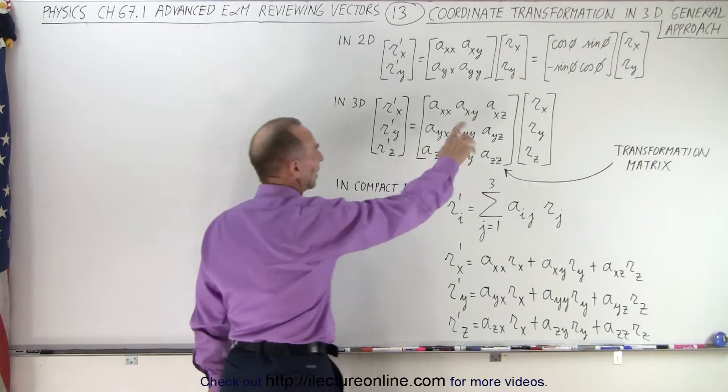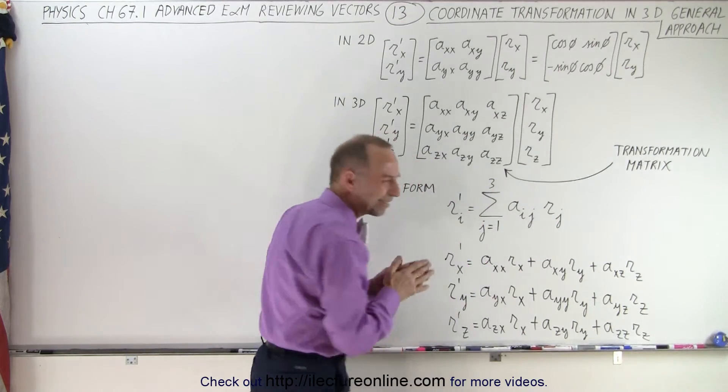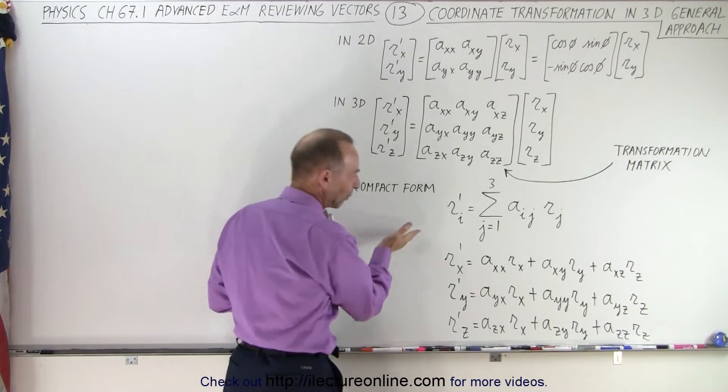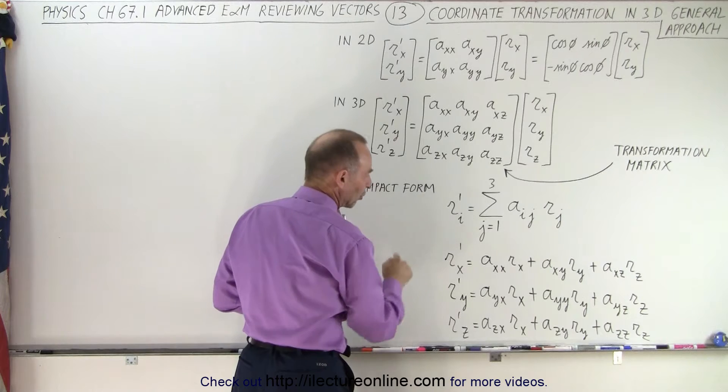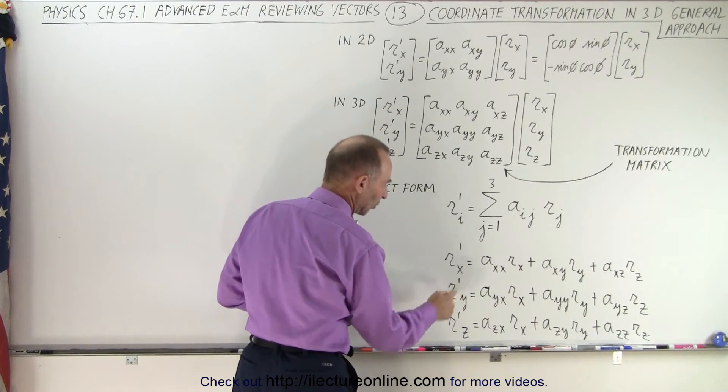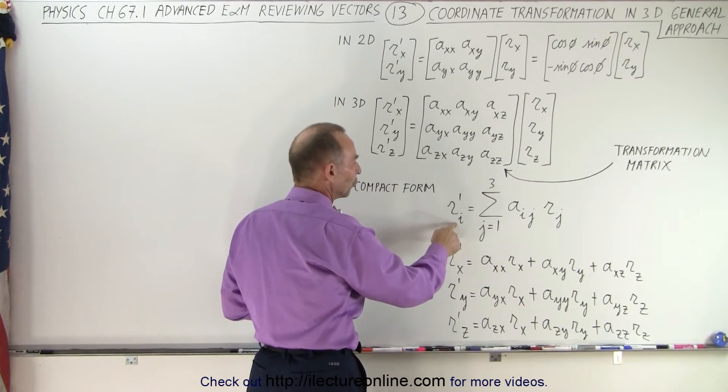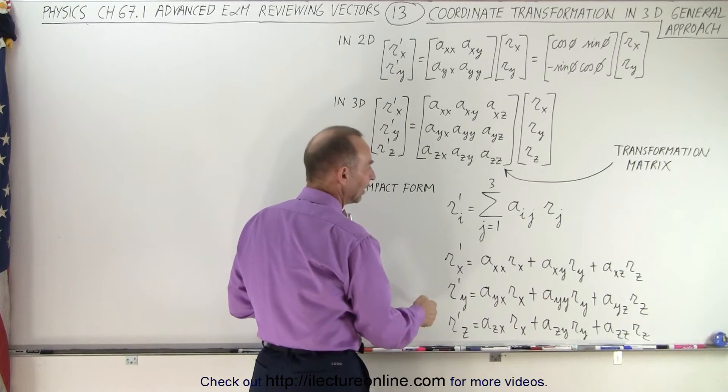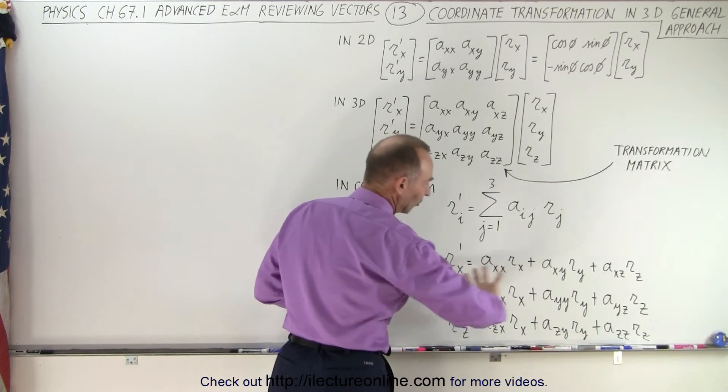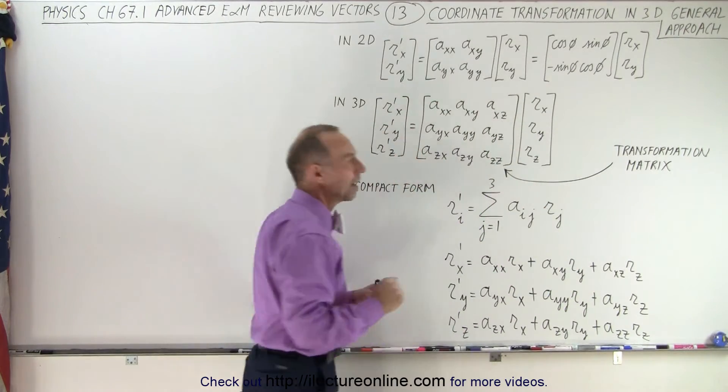We can also write this in a more compact form. Sometimes you'll see this and it's kind of hard to figure out what that actually means. So what I've done here is I've written out what these three terms would be: r sub x in the prime coordinate system, r sub y in the prime coordinate system, r sub z in the prime coordinate system, which is simply the sum of these where i goes from 1, 2, 3 or x, y, z and j goes from 1, 2, 3 or x, y, z. And so this is the same thing written out, which is basically this multiplied out together.